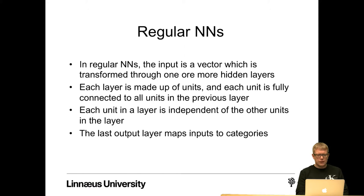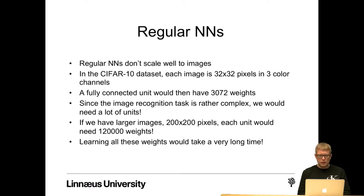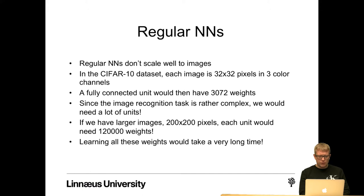In a regular neural network, the input is a vector which is transformed through one or more hidden layers. Each layer is made up of units, and each unit is fully connected to all units in the previous layer. Each unit in a layer is independent of the other units in the same layer, and the last output layer maps inputs to categories. Regular neural networks don't scale well to images. In the CIFAR-10 dataset, each image is 32x32 pixels in three color channels, so a fully connected unit will have 3,072 weights. For larger images, for example 200x200 pixels, each unit would need 120,000 weights, and learning all these weights would take a very long time.